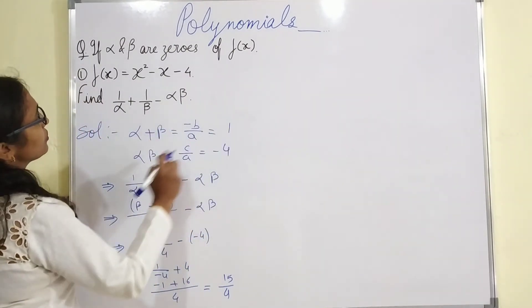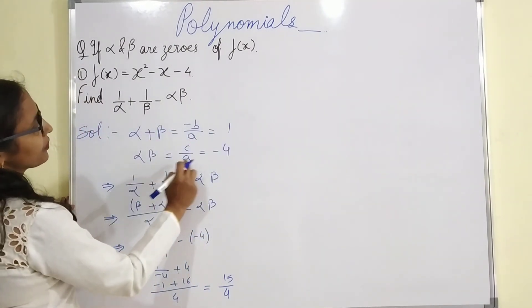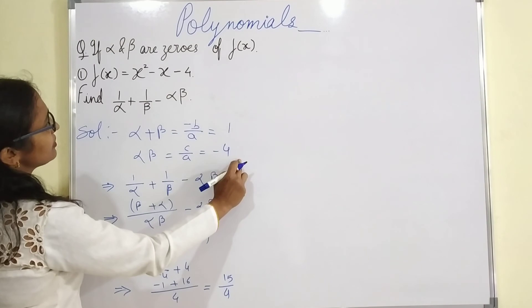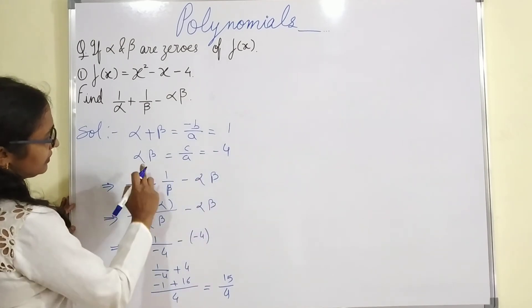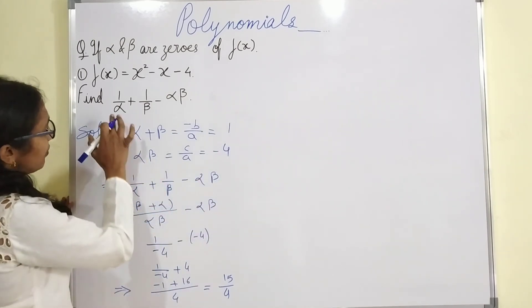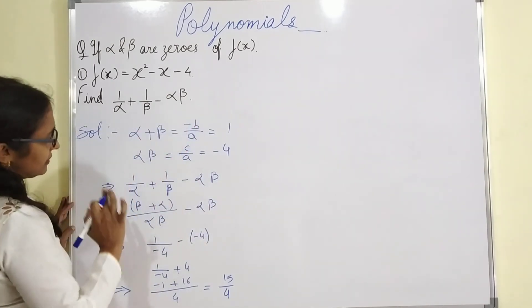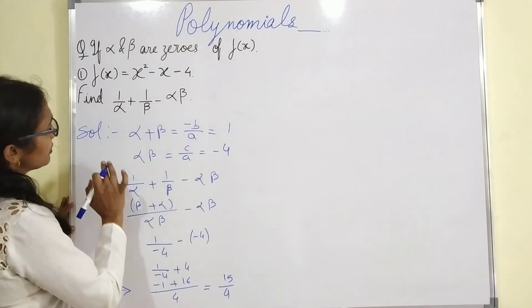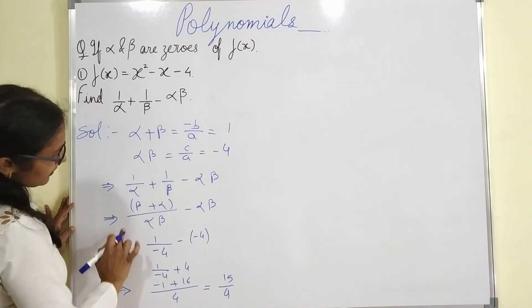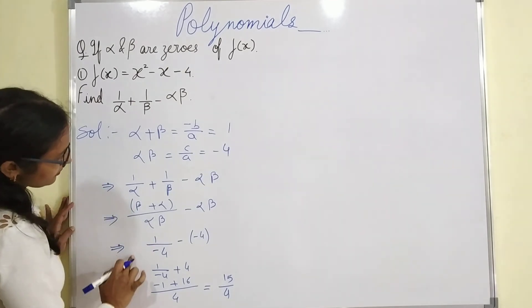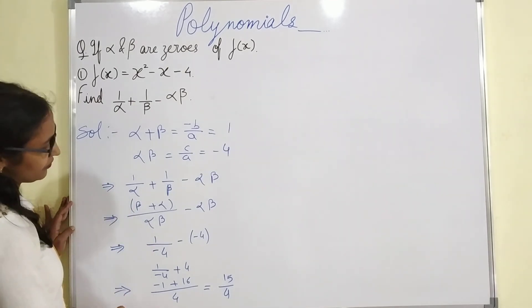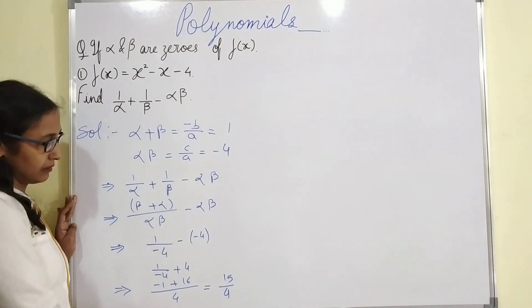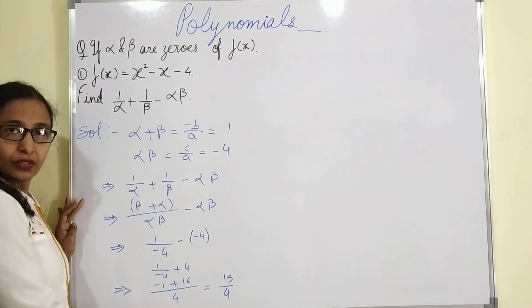So first find the sum of the zeros, then the product of the zeros, then solve the equation step by step to get the final answer.